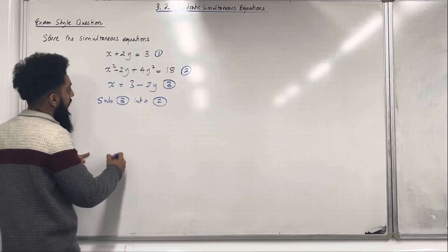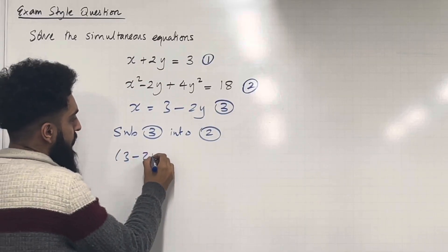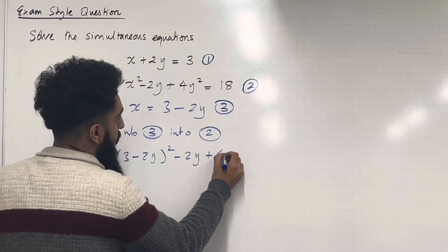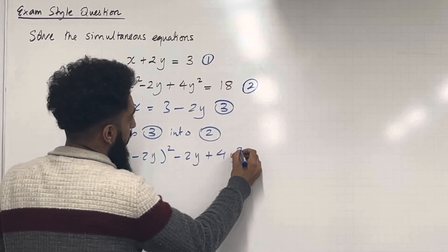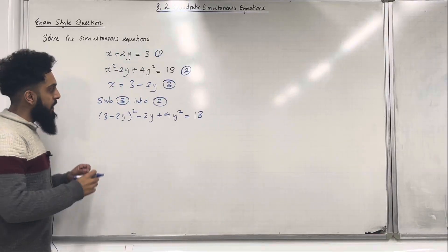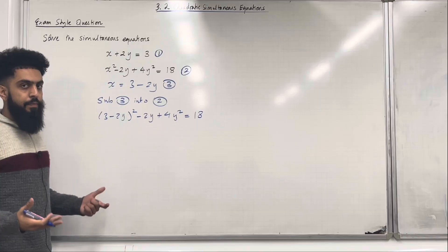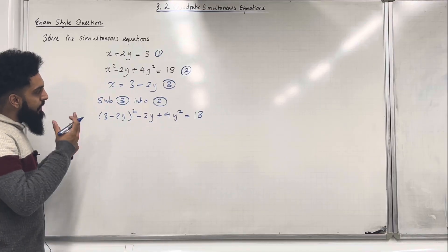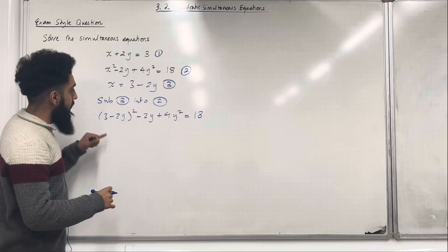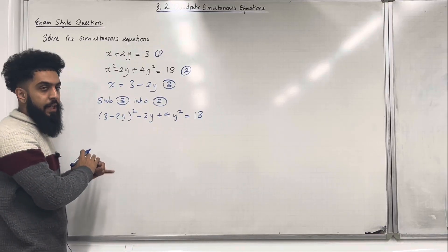Substituting equation 3 into equation 2 gives the following result: (3 minus 2y) squared minus 2y plus 4y squared is equal to 18. So now I've got an equation involving y and I can solve for y. To solve this equation we need to first expand the double bracket and then take everything to the left-hand side.